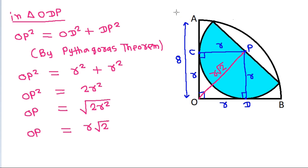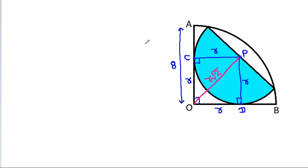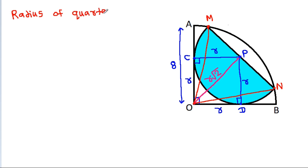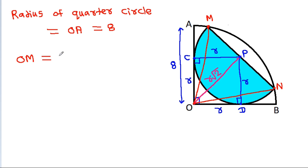Now suppose this point is M and this point is N. If we join OM and ON, they will each be equal to 8, since M and N lie on the quarter circle of radius 8. So OM = ON = 8.